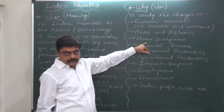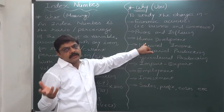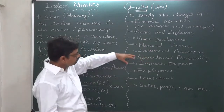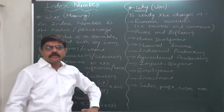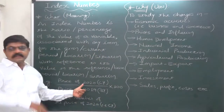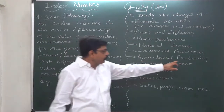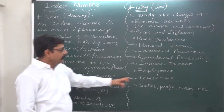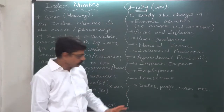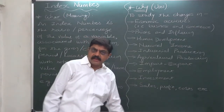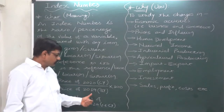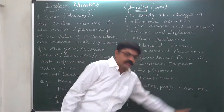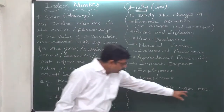Index numbers are also used for human development — there are many criteria and for all of them index numbers are calculated individually. Industrial production: what is the situation of industrial production in 2020 compared to some past year? Similarly agricultural production, imports and exports, employment, investment and FDI — foreign direct investment — what is the scenario in 2020 compared to 2019, 2018, or any past year.